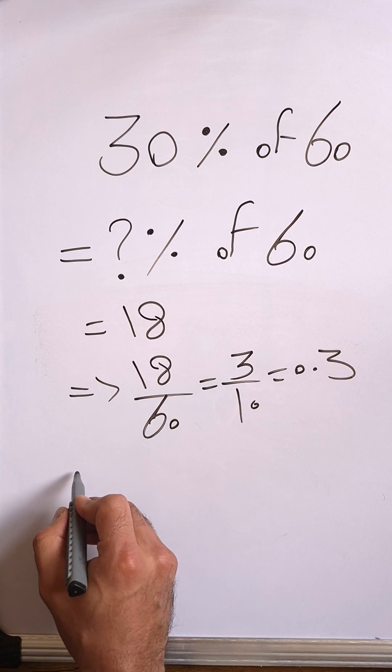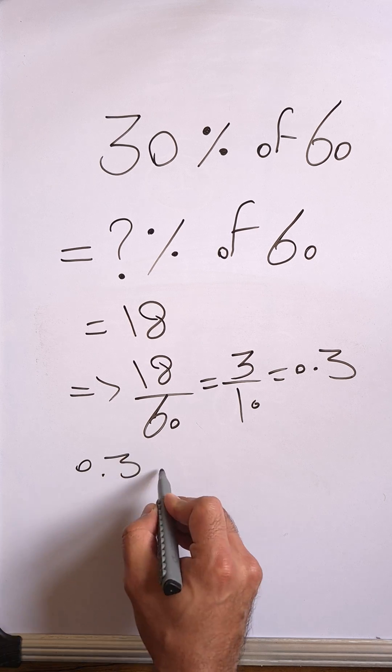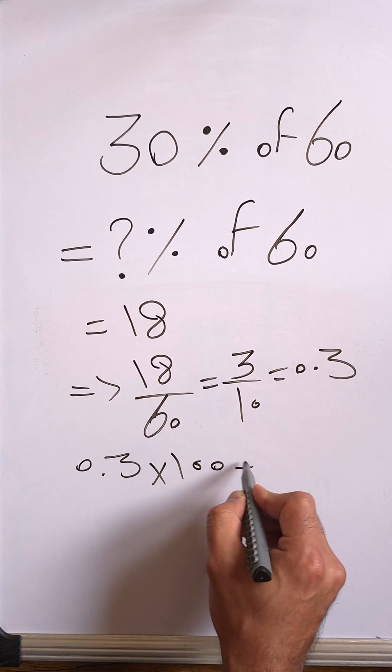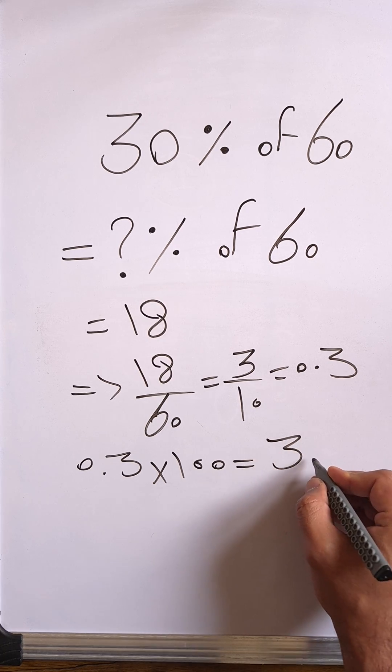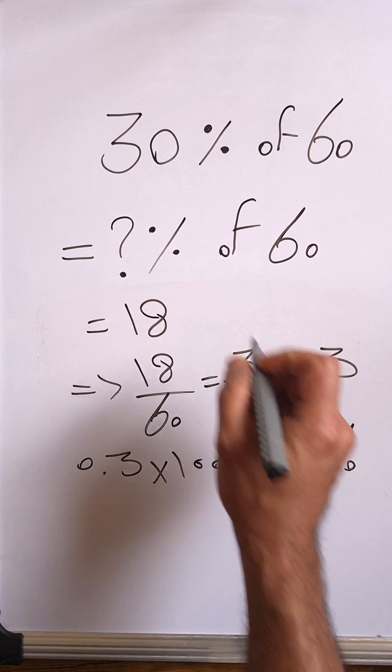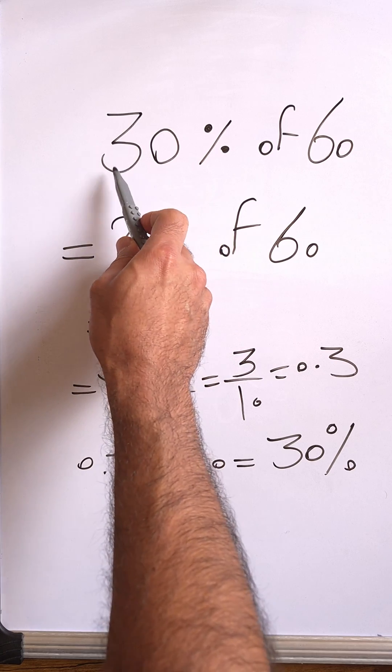Let's multiply that by 100 to just turn it into a percentage. So 0.3 times 100 equals 30 percent. And that's the same thing.